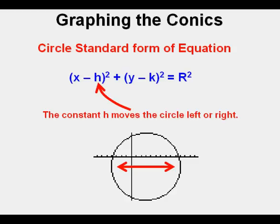X and y are the variables in this equation. The constant h is a number that moves the center of the circle left or right from x equals 0 on a coordinate plane. Counterintuitively, if h is positive so that it's x minus a positive number, it moves the center of the circle to the right, while a negative h resulting in x plus a number moves the center of the circle to the left.